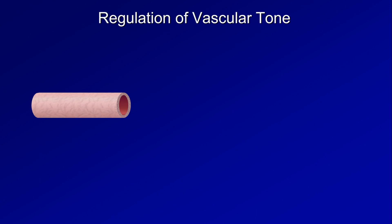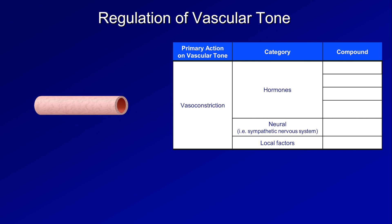Control of vascular tone is an incredibly complex process. Some compounds cause blood vessels to constrict — for example, hormones like epinephrine, norepinephrine, angiotensin 2, and antidiuretic hormone, also known as vasopressin. Neural input via the sympathetic nervous system also stimulates vasoconstriction via the release of norepinephrine at synapses, and local factors such as endothelin, predominantly produced in response to vascular injury, contribute as well.